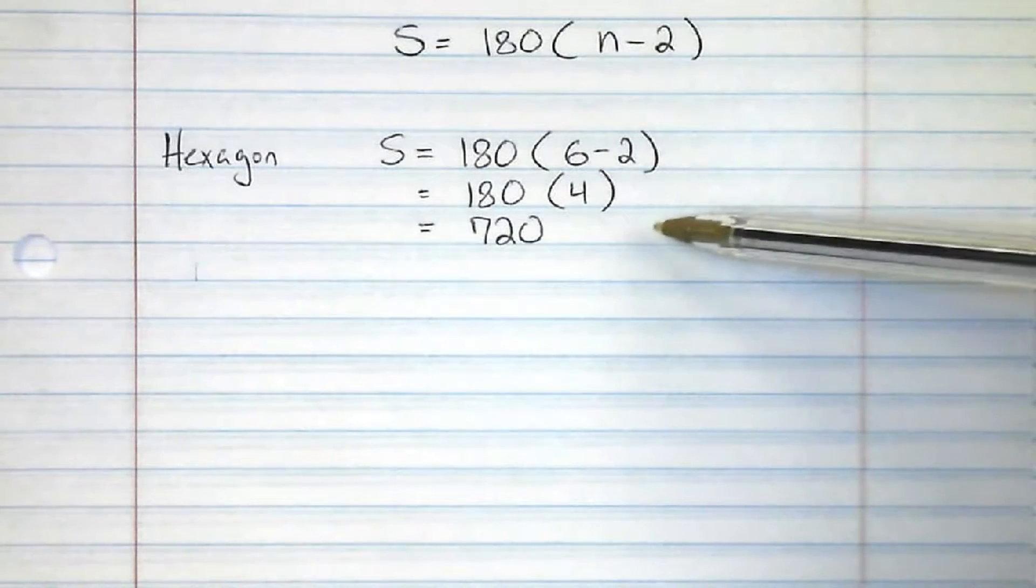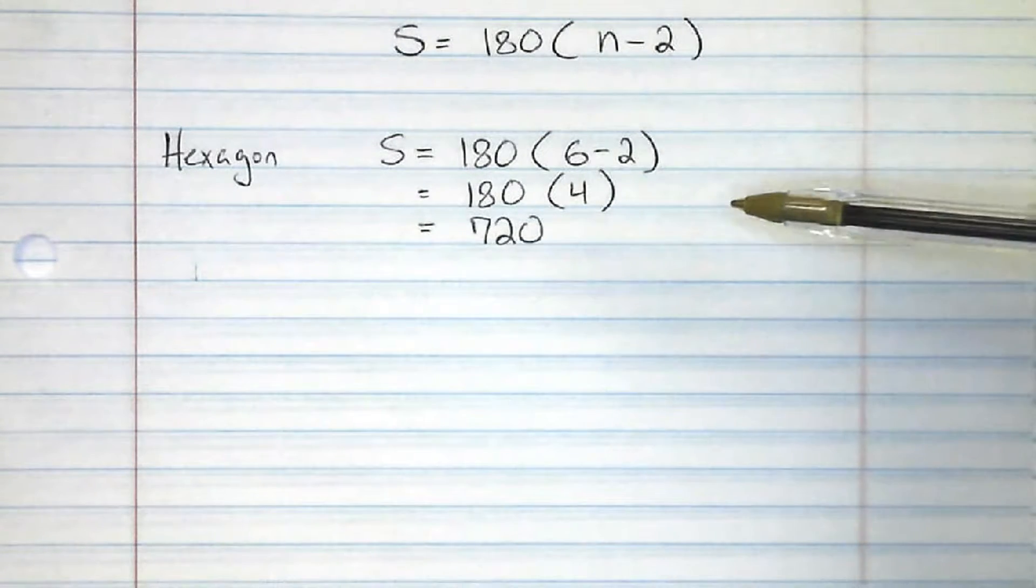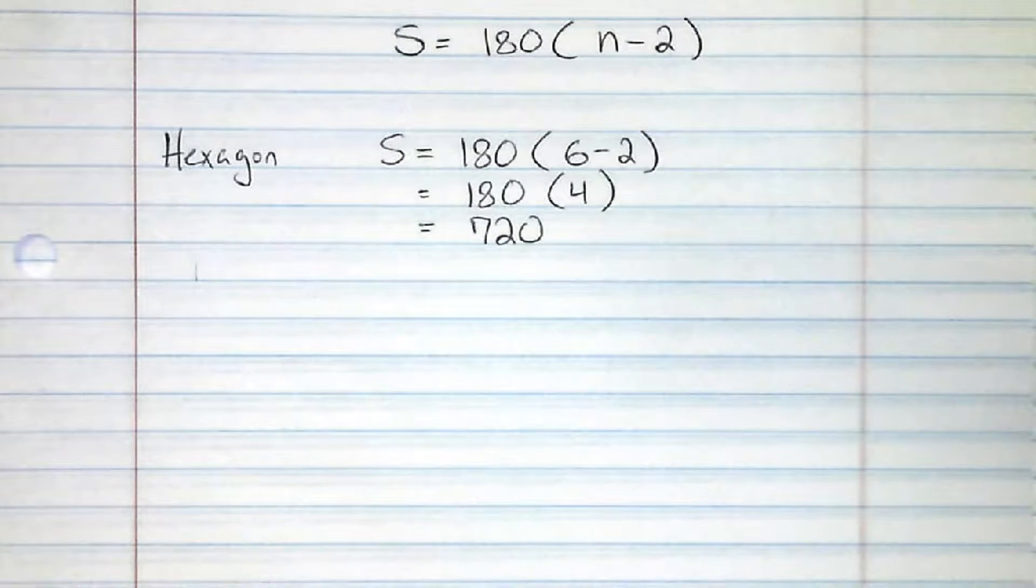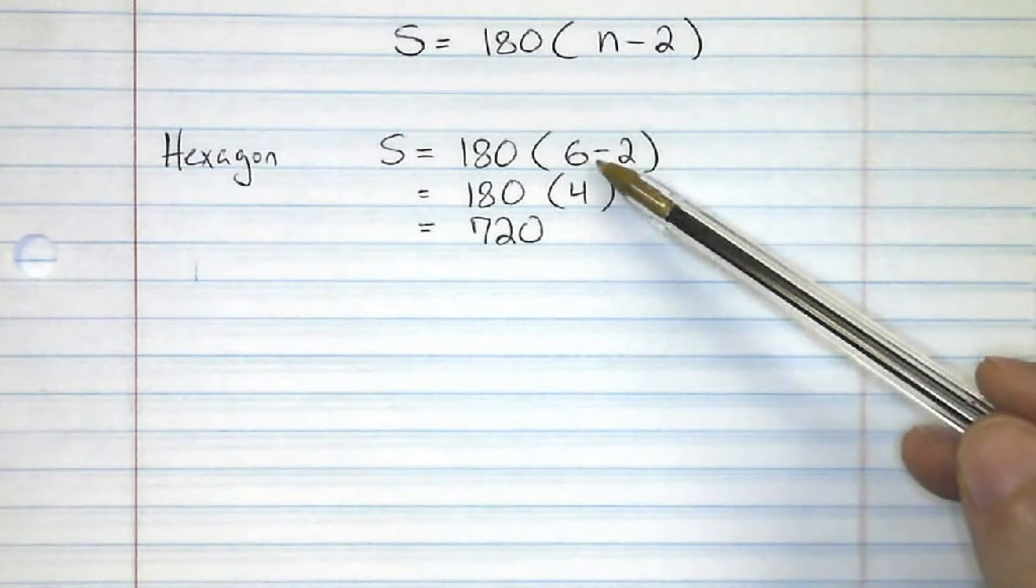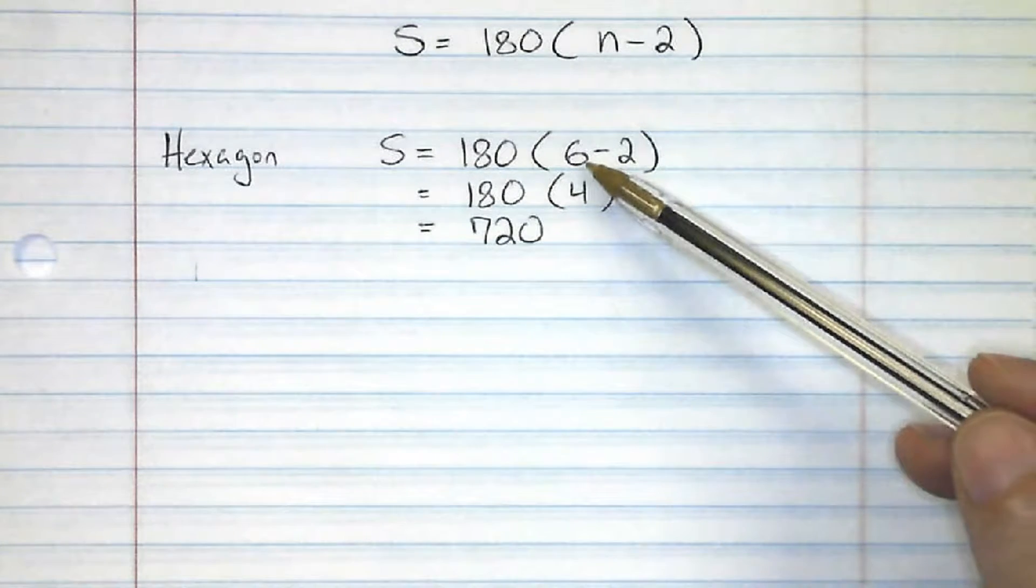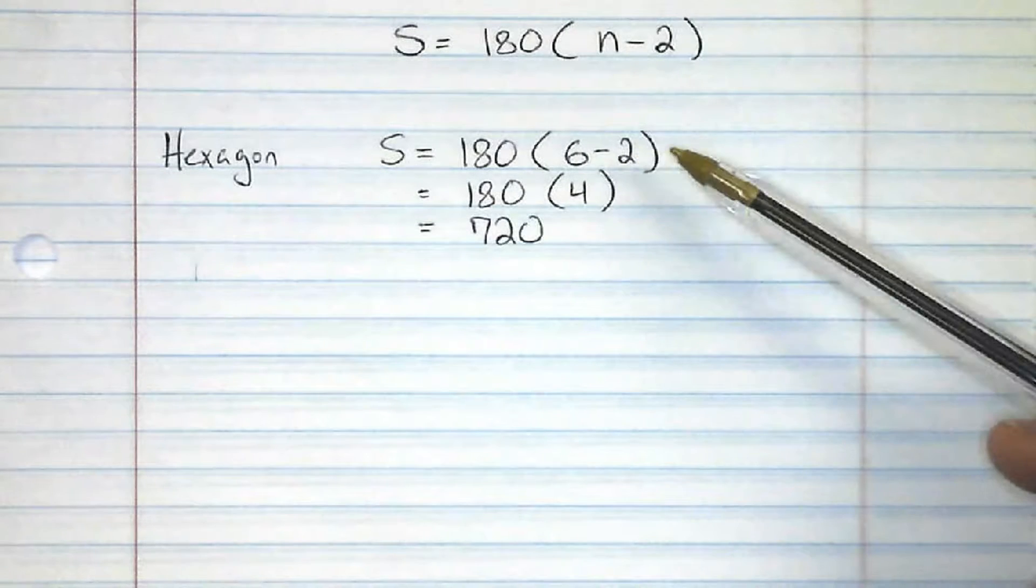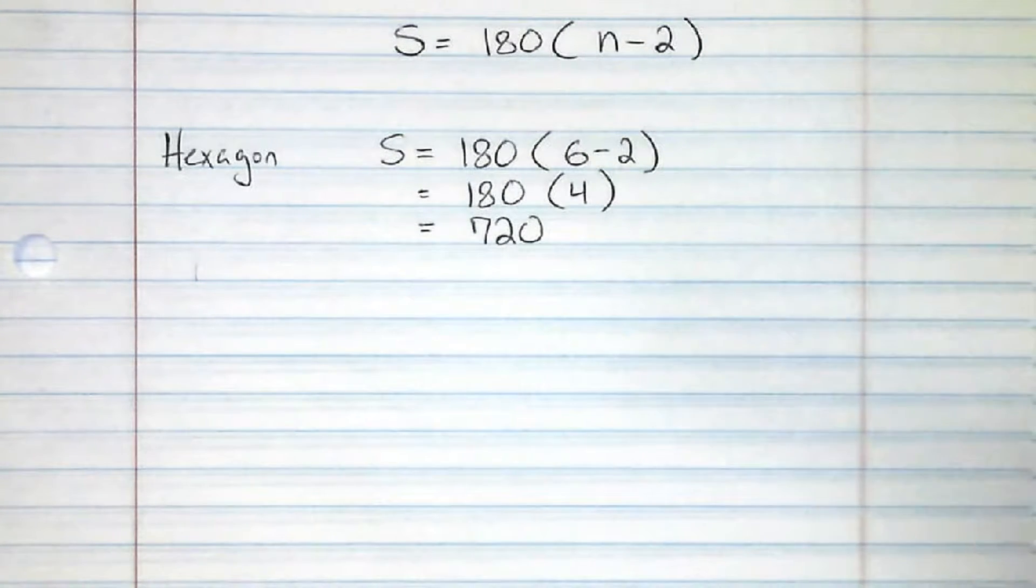Now, using this same pattern, it doesn't matter how many sides the figure has, as long as it's a convex polygon. If I had something with 500 sides, I would literally use the same exact formula, and I would put 500 here. 500 minus 2 would be 498, multiply that by the 180, and that would be the sum of all the interior angles.